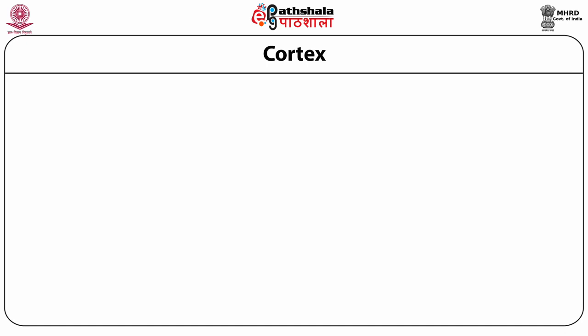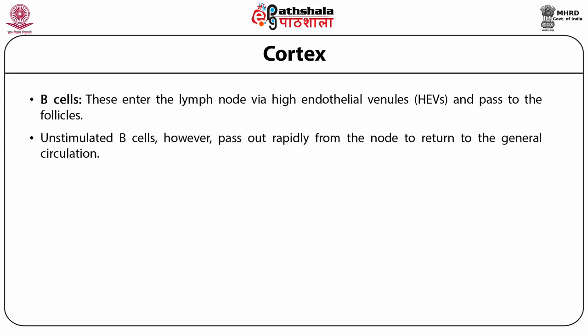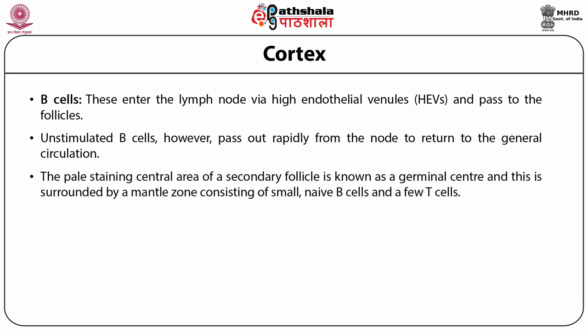In the cortex are present B cells. B cells enter the lymph node via high endothelial venules (HEVs) and pass to the follicles. If activated by antigenic stimulation, they proliferate and remain in the node. Unstimulated B cells pass out rapidly from the nodes to return to the general circulation. Activated B cells within the lymphoid follicles are known as follicle center cells. The pale-staining central area of secondary follicles is known as the germinal center, surrounded by a mantle zone consisting of small naive B cells and a few T cells.